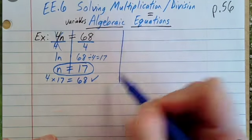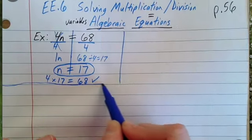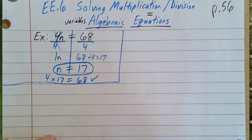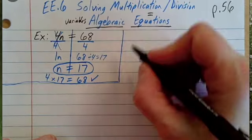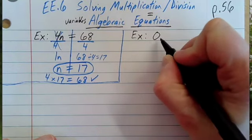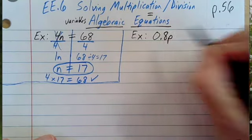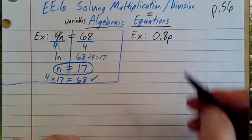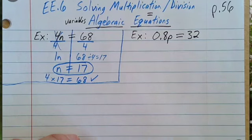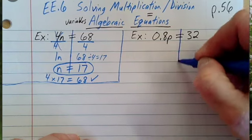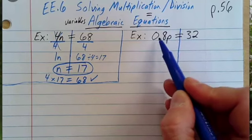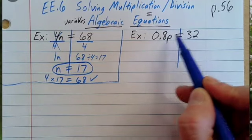I'm going to do another example. I'll write the example in black and show what I'm doing in blue. The example is 0.8 next to a p, which means 0.8 times p equals 32. So I'm going to draw a line down the equal sign. I need to solve for p.